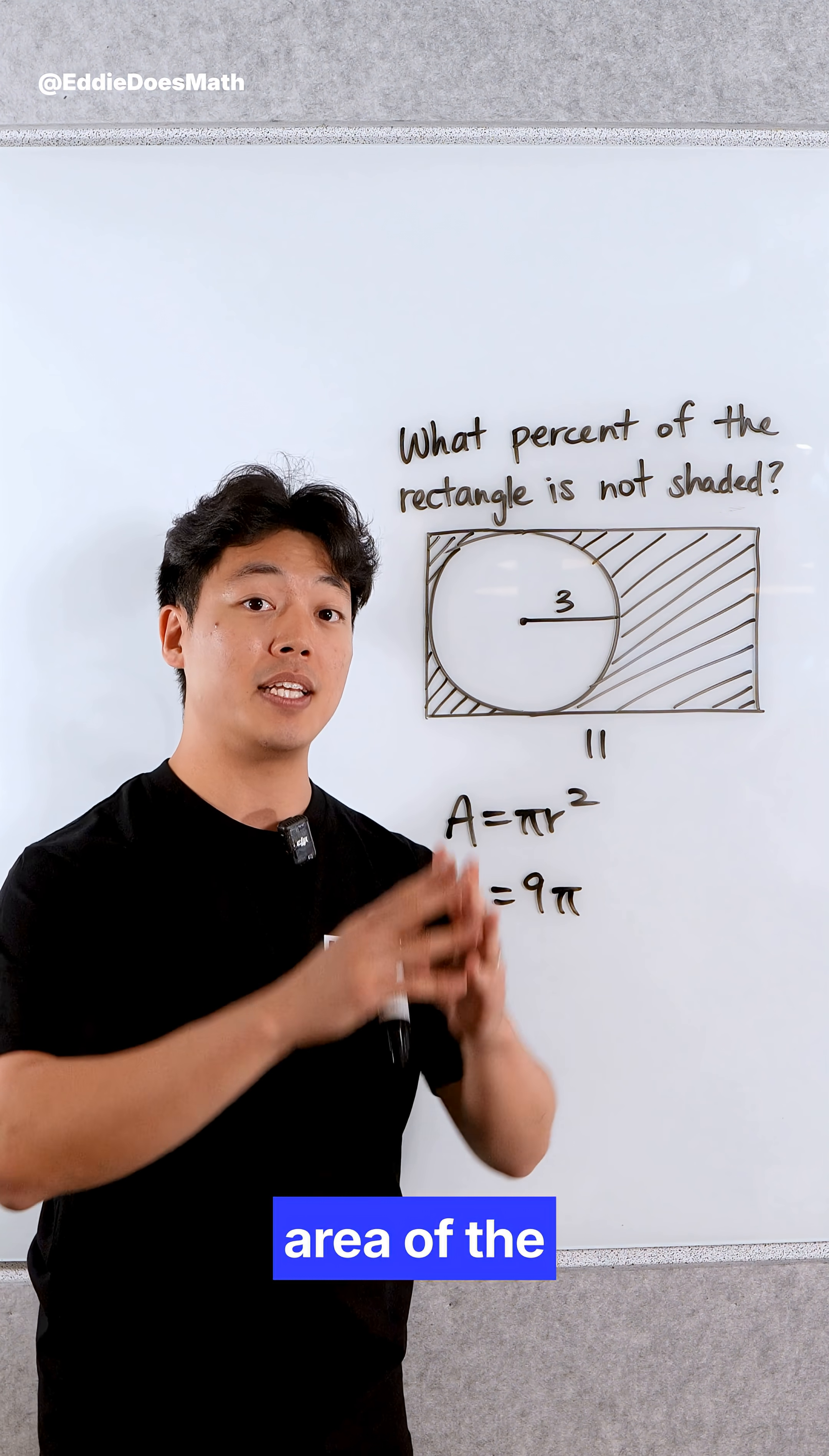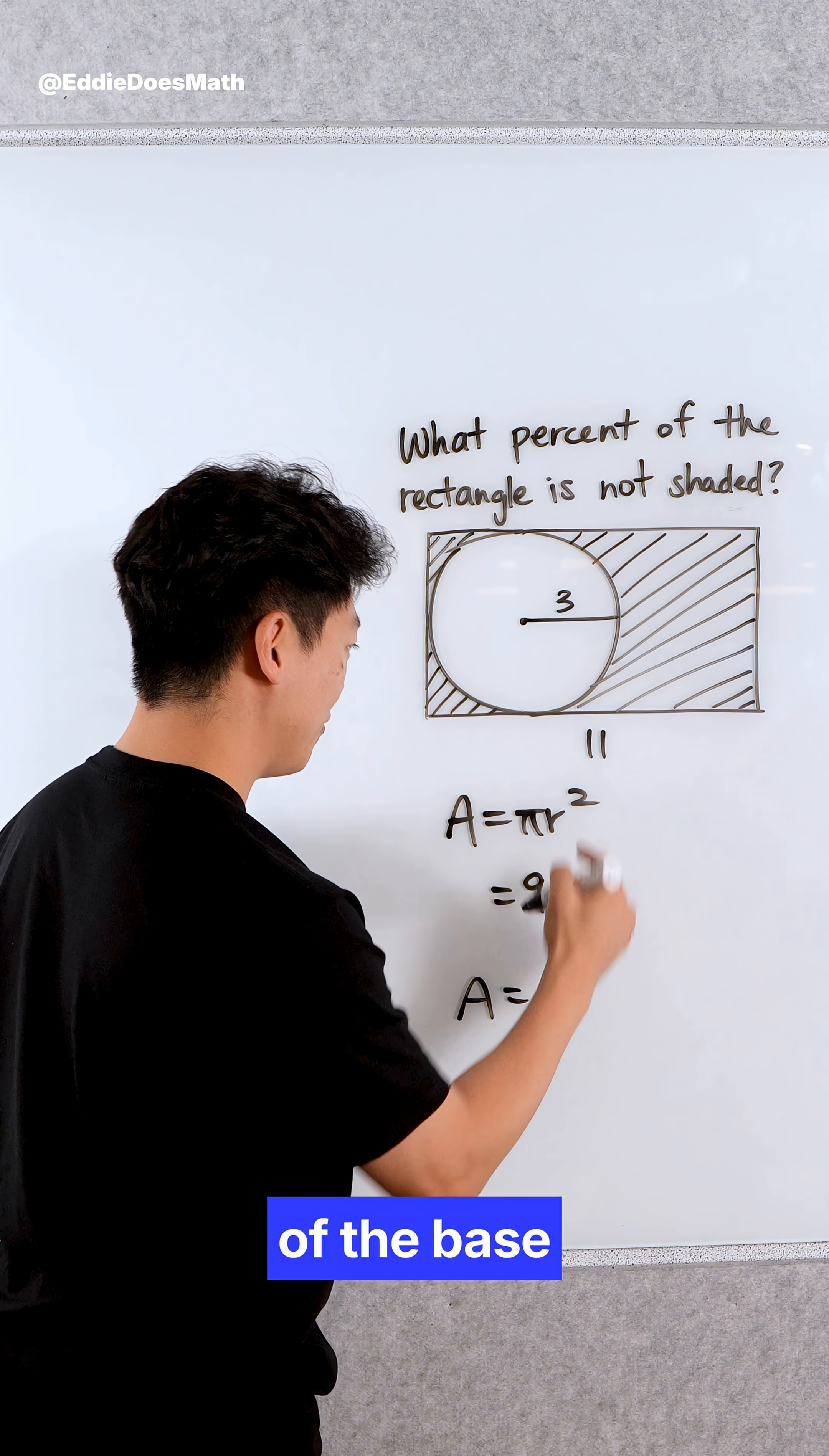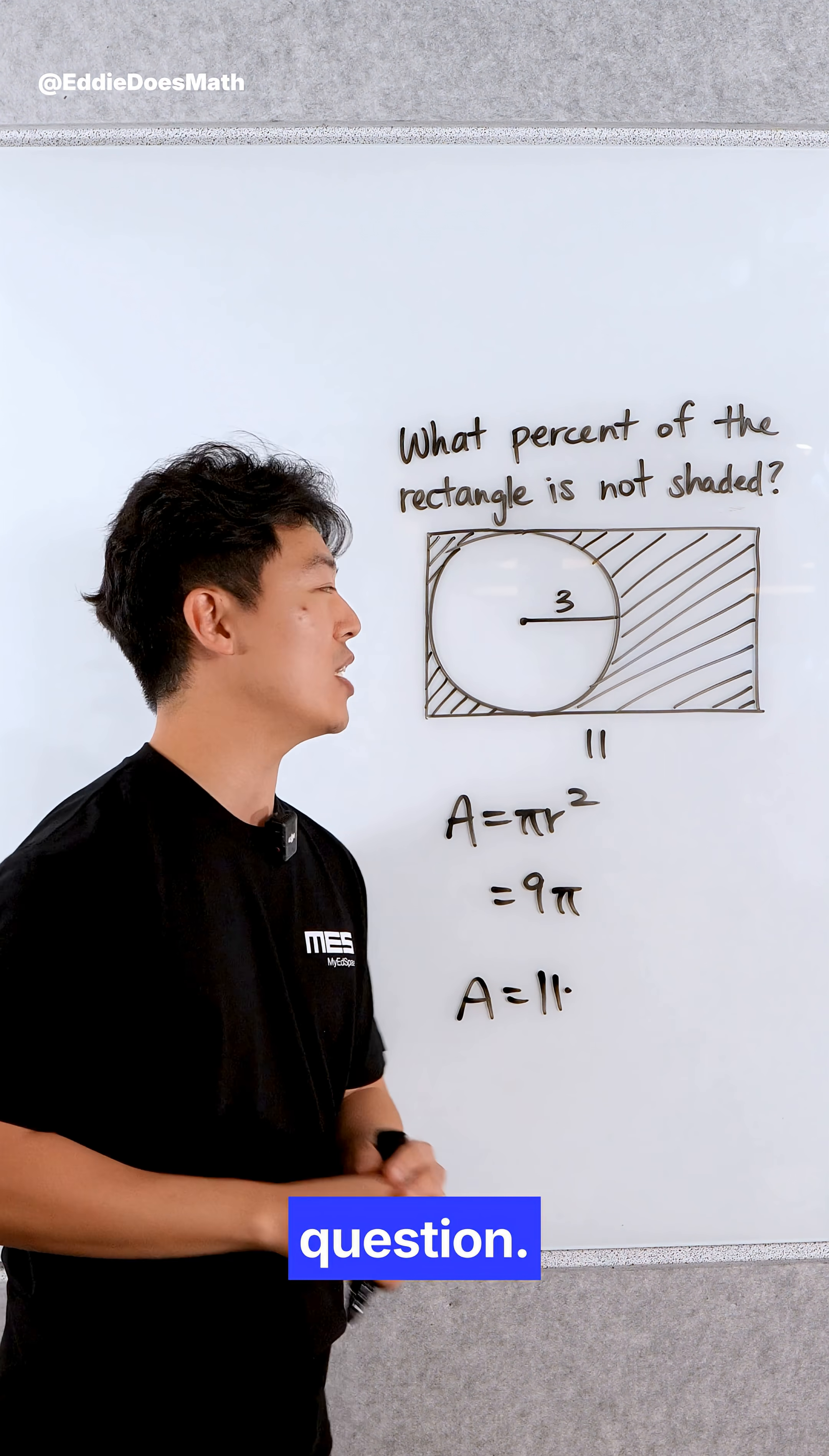Now we need to find the area of the entire rectangle in order to find what to put this 9 pi over. So we have the area of the base times the height. Now finding the height is probably the most challenging part about this question.